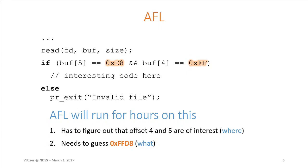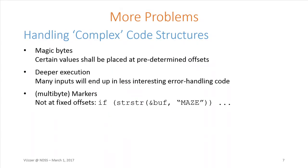There has been work after AFL — for example, Driller — that incorporates symbolic execution. This will increase your results, but adding symbolic execution to the equation gives you scalability issues. At some point you will still have a very slow fuzzer having a hard time reaching the interesting parts of your binary. Besides magic bytes, there are more problems: existing fuzzers have many inputs ending up executing code mainly used for error handling, and they have a very hard time reaching code blocks that are deeply nested far away in a binary.